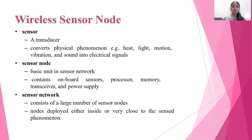A wireless sensor node contains a sensor. A sensor is a transducer that converts physical phenomena such as heat, light, motion, vibration, and sound into electrical signals. A sensor node is a basic unit in a sensor network and contains onboard sensors, processor, memory, transceiver, and a power supply. A sensor network consists of a large number of sensor nodes, deployed either inside or very close to the sensed phenomenon.